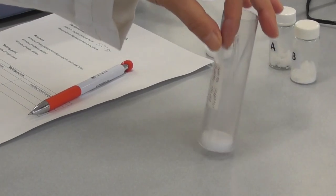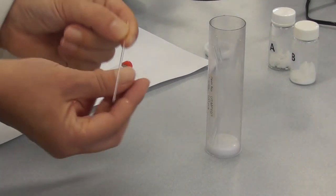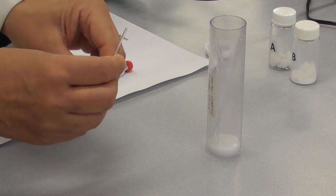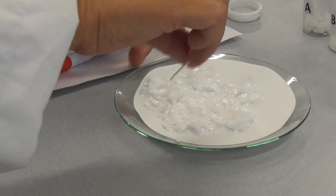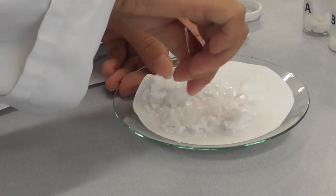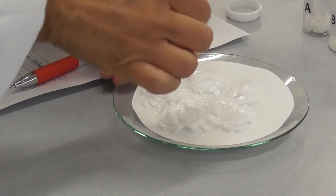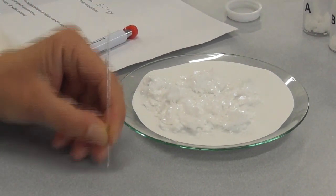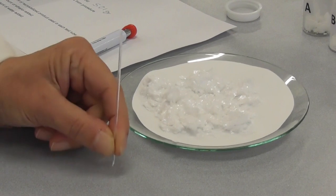To determine the melting point we need a capillary tube. These have one open end and one closed end. We dip the open end into our crystals on the filter paper to get some of the crystals into the tube and then gently tap it for the crystals to fall down into the tube.